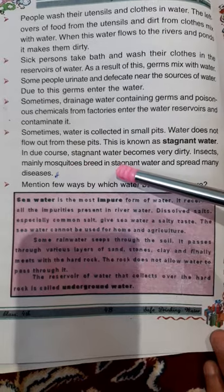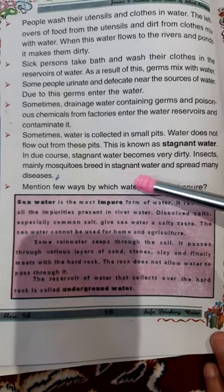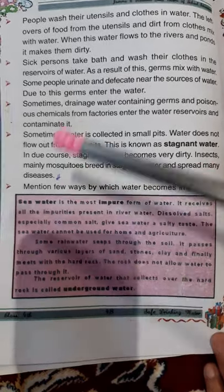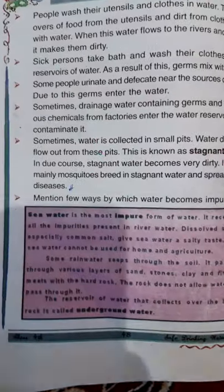Insects, mainly mosquitoes, breed in stagnant water and spread many diseases.